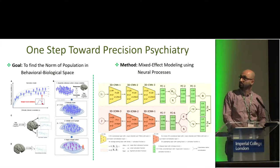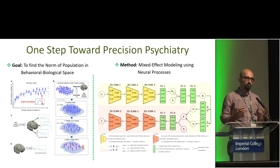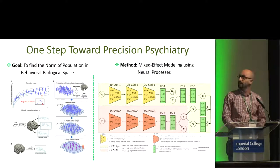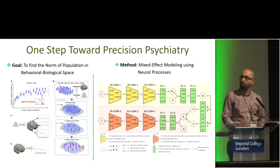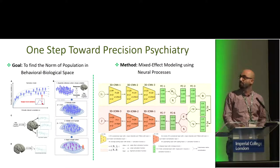This neural process brings the advantages of neural network theory — including, for example, representation learning — combined with the advantages of probabilistic approaches such as Gaussian processes, all under the same umbrella.